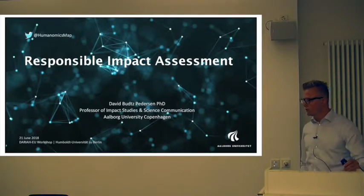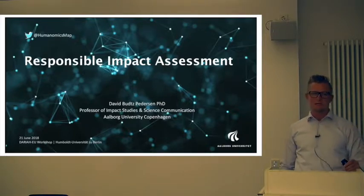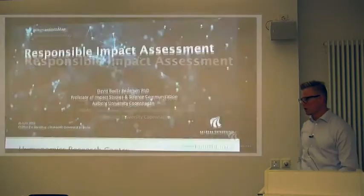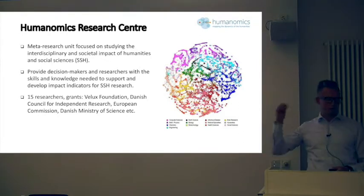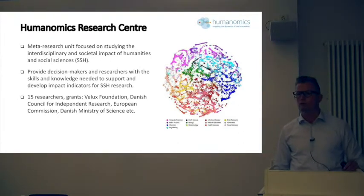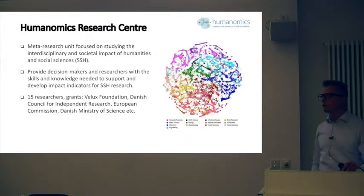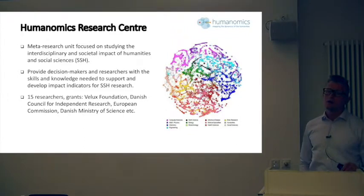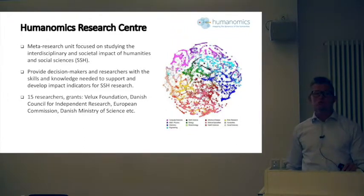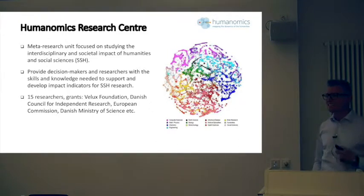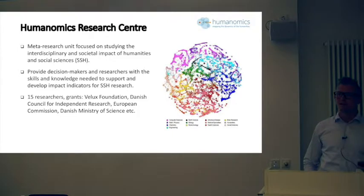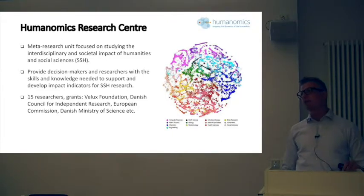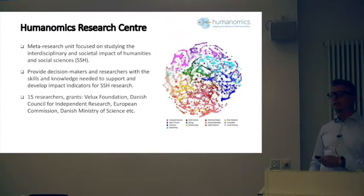You will see a little bit of an overlap, but that will only allow me to skip over some of my slides and go more directly into discussion. I'm the head of research of the Humanomics Research Center, which is a center at Aalborg University funded by different foundations and research councils and governments. We are running impact studies of all types and kinds on the humanities, especially also on the social sciences. We have been working for a number of different institutions the last couple of years, trying to develop a more sensitive, nuanced, multi-dimensional understanding of what an impact framework within the humanities could look like.